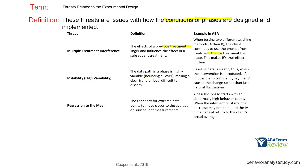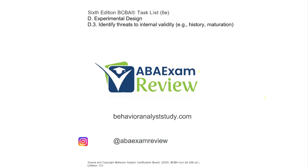Instability or high variability: the data path in a phase is highly variable and bouncing all over, making a clear trend or level difficult. The baseline data is erratic, so when the intervention is introduced it's impossible to confidently say the IV caused a change rather than just natural fluctuations. Regression to the mean is the tendency for extreme data points to move closer to the average on subsequent measurements. If a baseline phase starts with an abnormally high behavior count, the decrease when intervention starts may not be due to the IV but a natural return to the client's actual average — for example, a client whose average is 200 starts at 500, then regresses back down to 250 or 200.